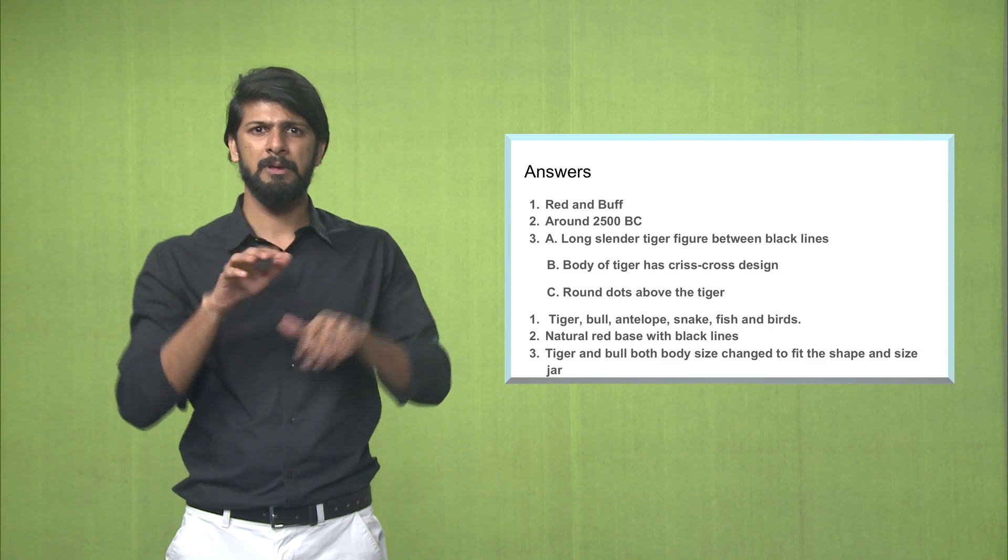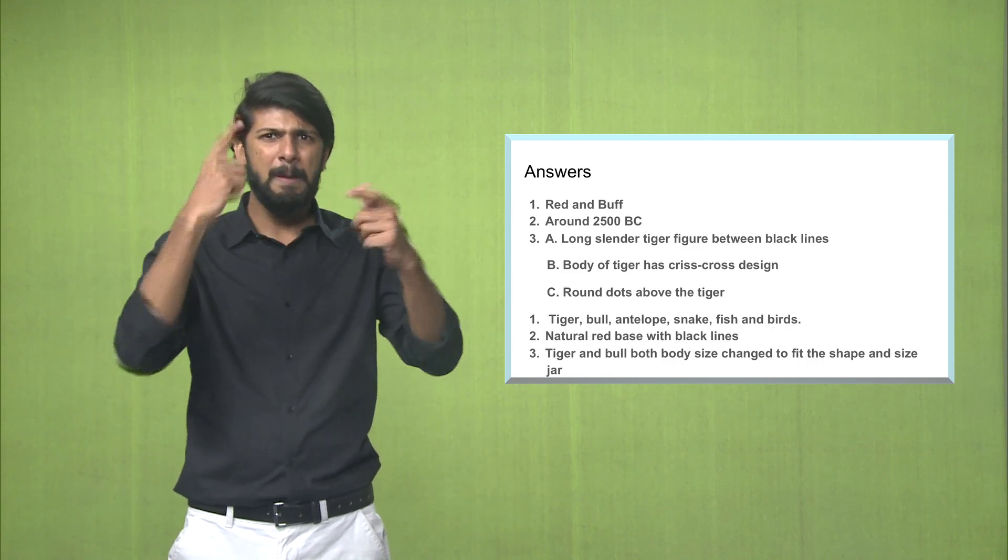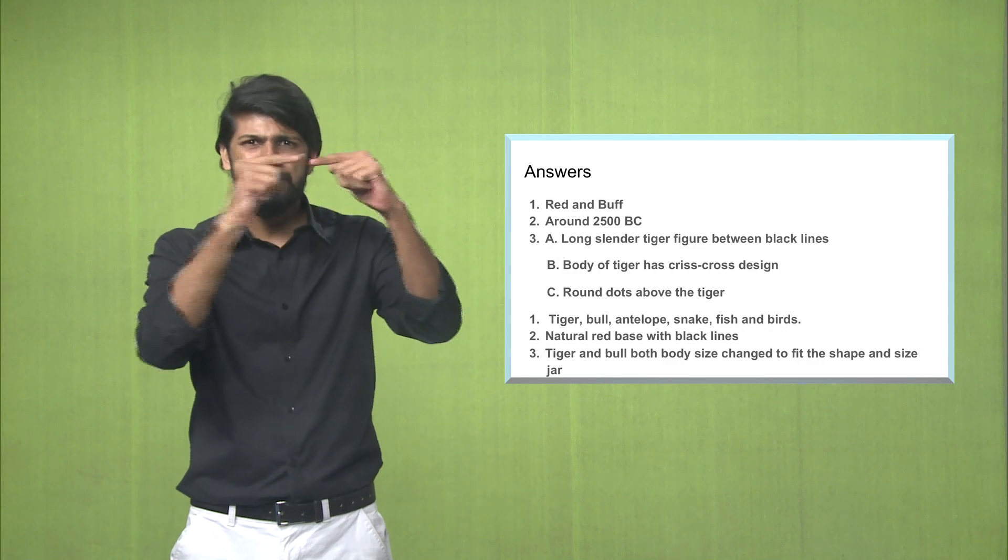Answer number three. The first point is, the long slender tiger figure between black lines.